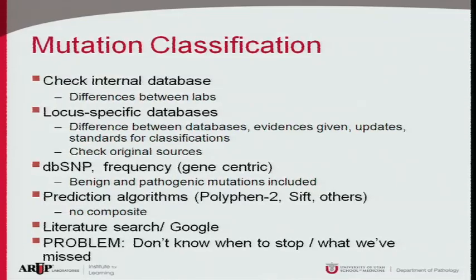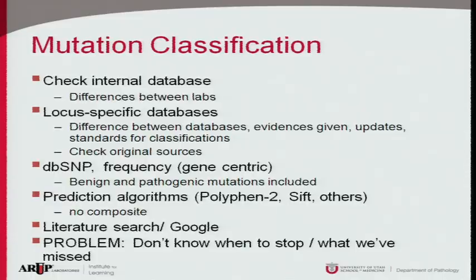One consideration: if we're looking for a very rare disease and find a variant at high frequency in a population, it's probably not causative. On the other hand, for common diseases — especially recessive ones — finding it at fairly high frequency in dbSNP doesn't eliminate pathogenicity. We do look at prediction algorithms, though this is more of a warm and fuzzy — I haven't classified anything based solely on a prediction. I also do a literature search and I'm not above Googling.